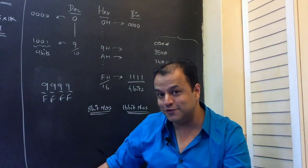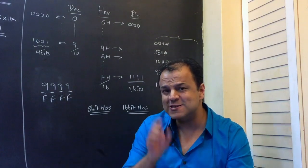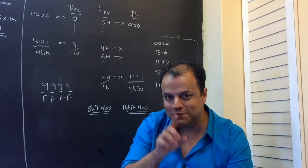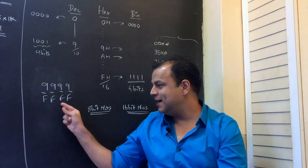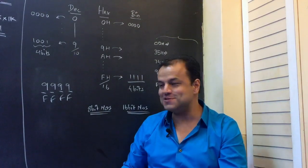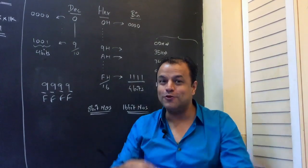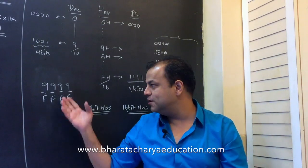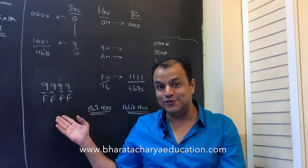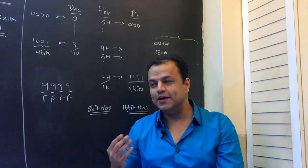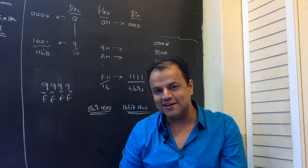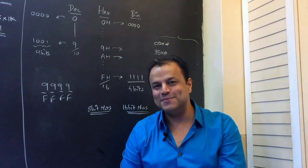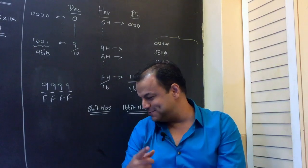Do you see the difference? Both are using the same space but hexadecimal gives you far more information. This is 10,000, this is 65,000. If I tell you your starting salary will be a 4-digit number, would you want it to be decimal or hexadecimal? You got my point.